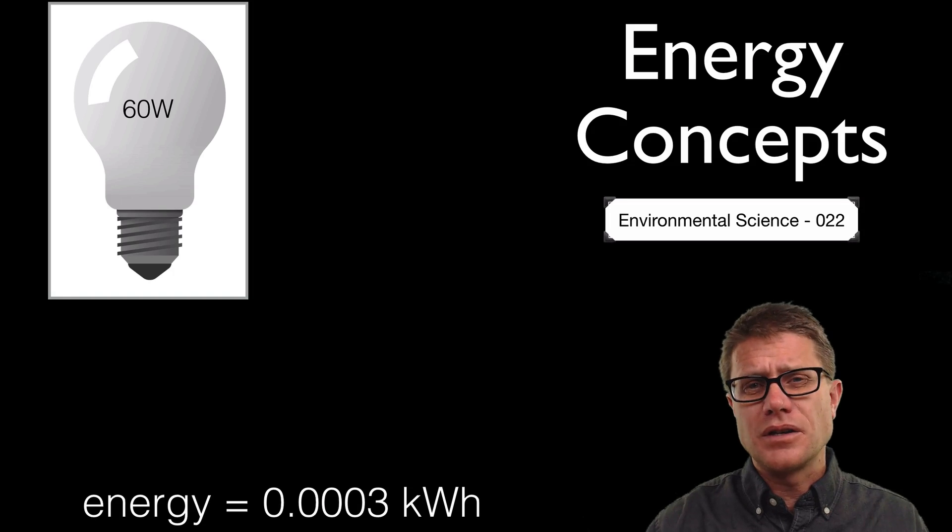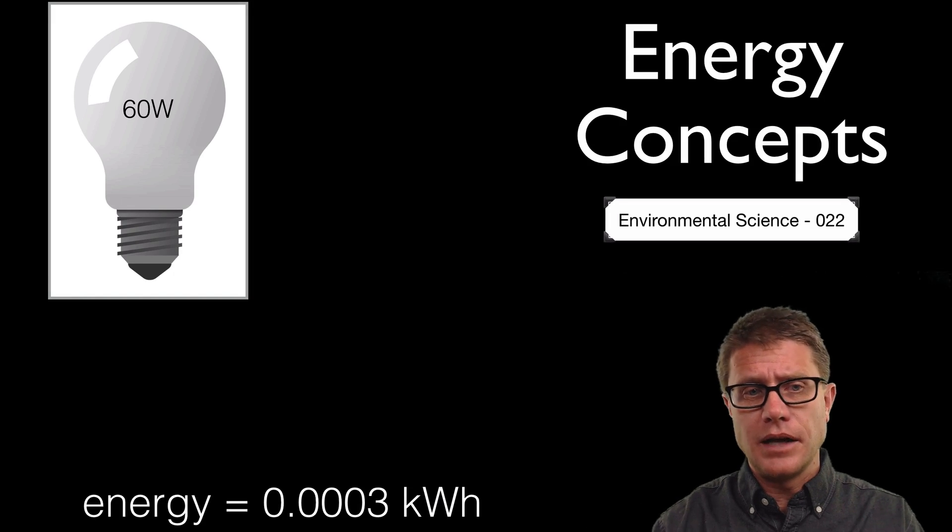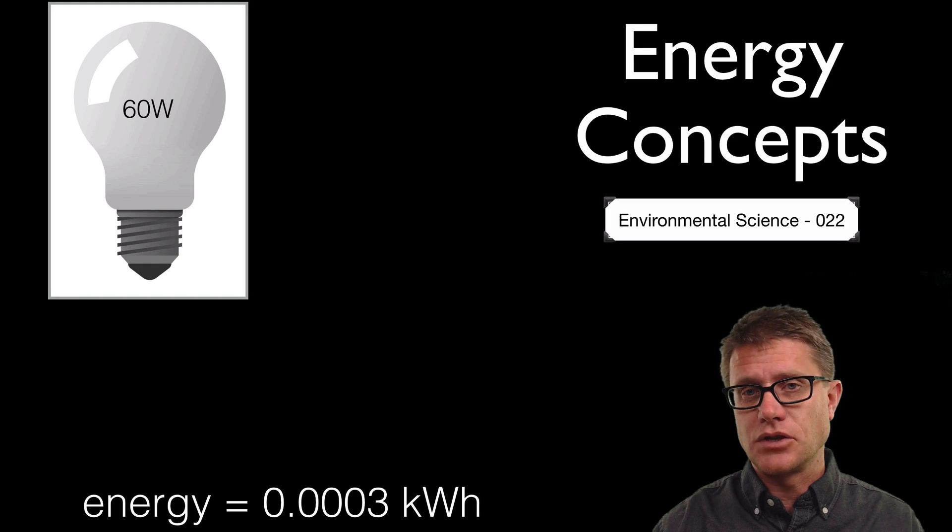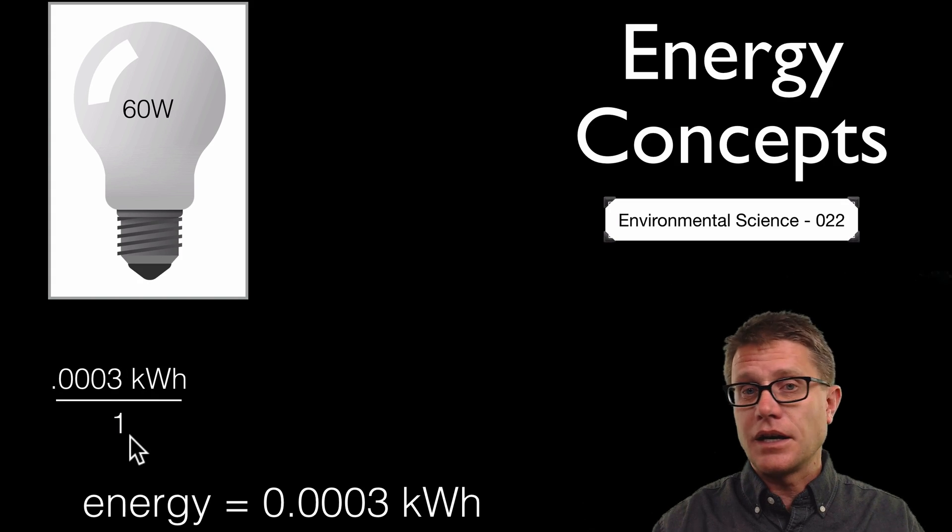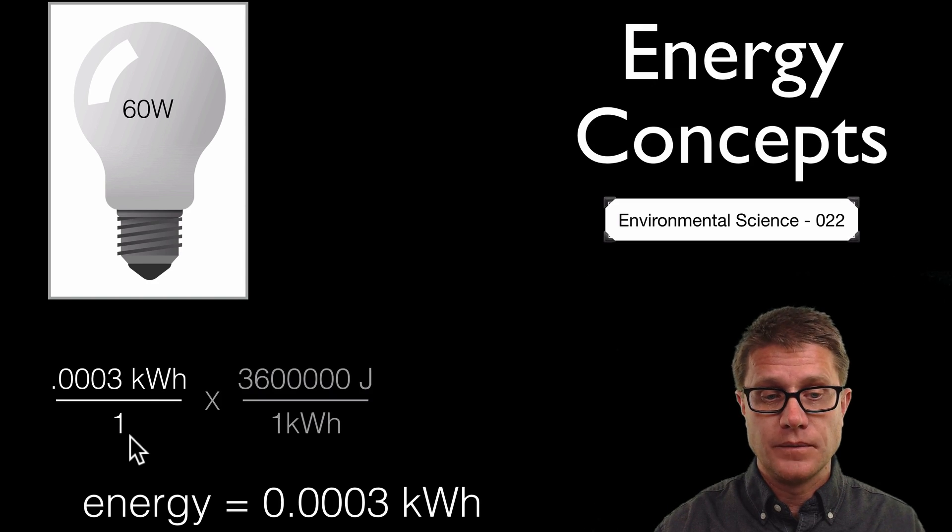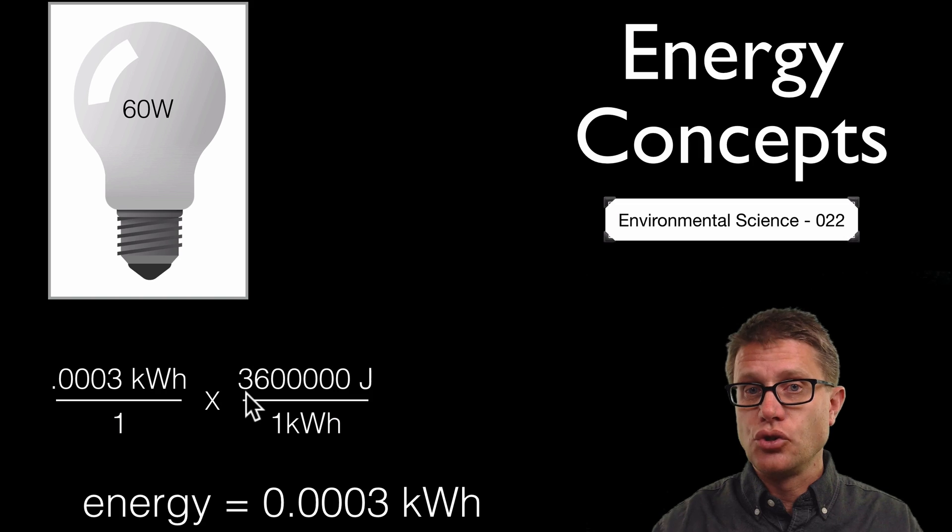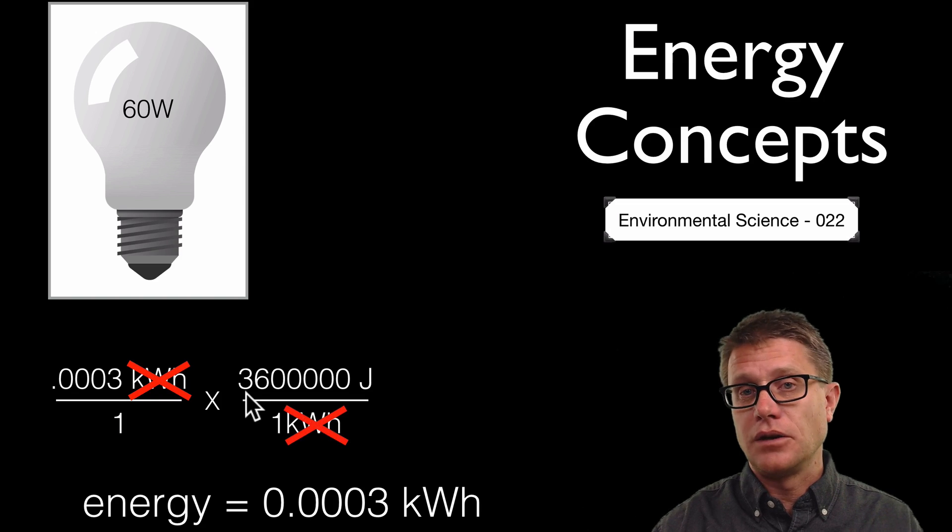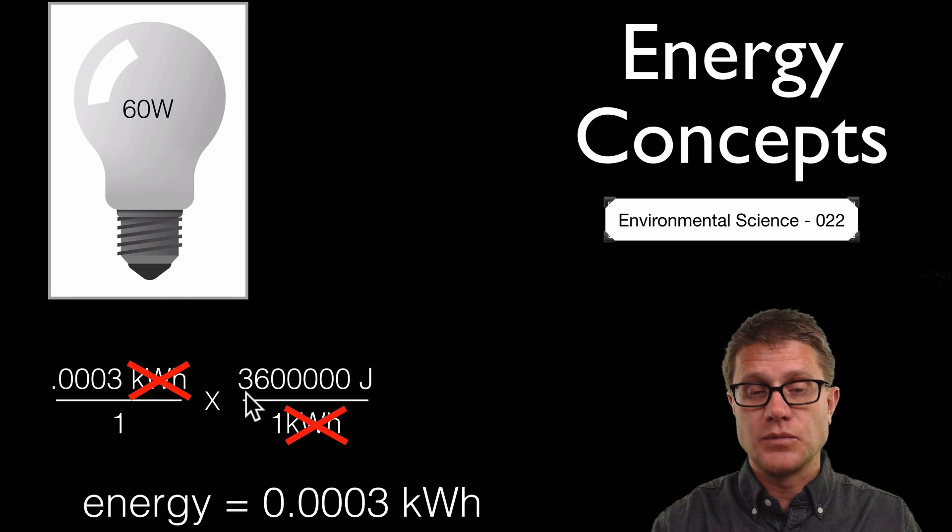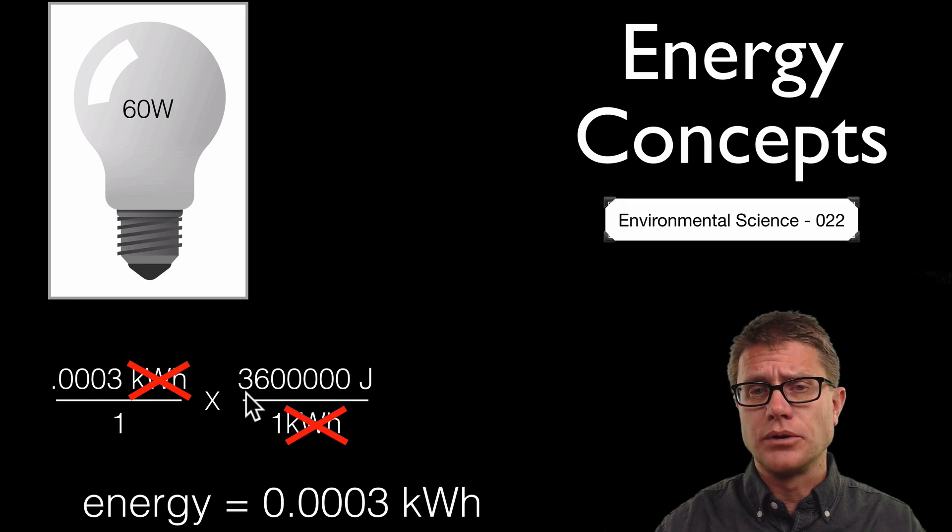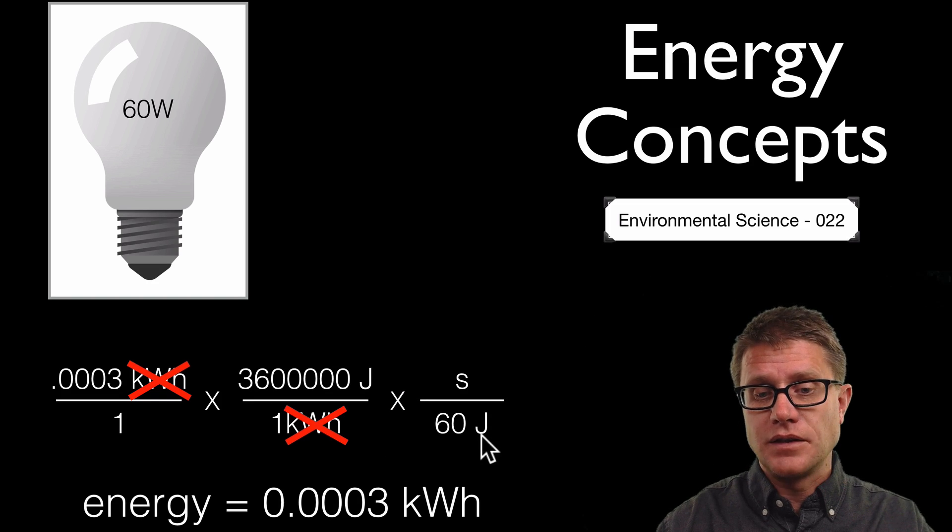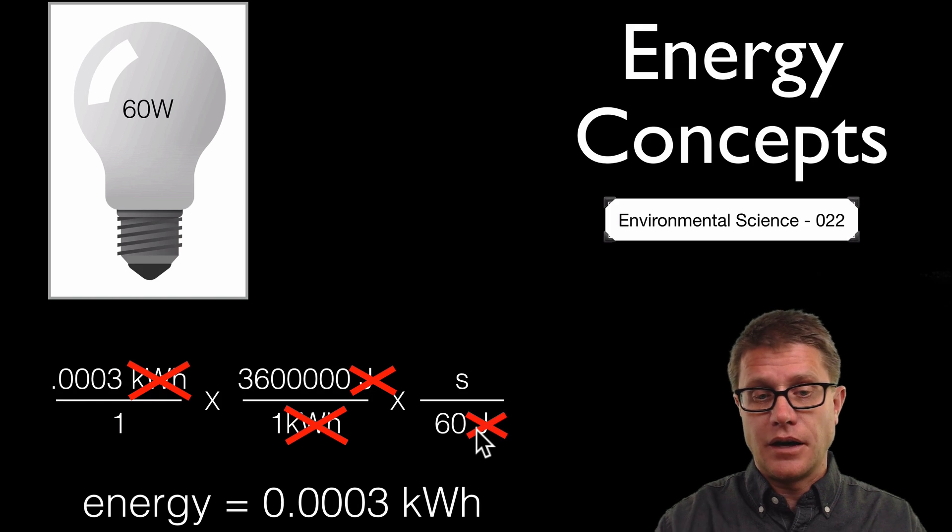That is the energy, and I want to convert it to something I actually know. How much time could we run a 60 watt light bulb with the same amount of energy? I'm doing dimensional analysis, so I put this over 1. Then I look up a conversion: 1 kilowatt hour equals 3.6 million joules of energy. I'm canceling out the kilowatt hours and converting to joules. Now I convert to seconds. A watt equals a joule per second, so 60 watts is 60 joules per second. I cancel out my joules, multiply across the top, divide by the bottom, and get 18 seconds.